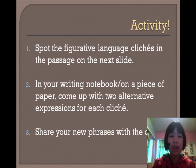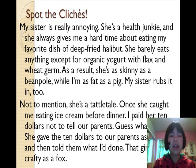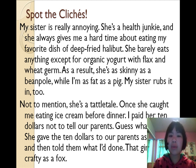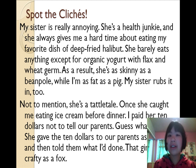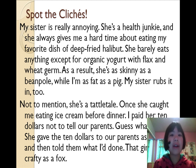Here's an activity for you: spot the figurative language clichés in the passage on the next slide, and in your writing notebook or on a piece of paper, come up with two alternative expressions for each cliché. Spot the clichés: "My sister is really annoying. She's a health junkie, and she always gives me a hard time about eating my favorite dish of deep-fried halibut. She barely eats anything except for organic yogurt with flax and wheat germ. As a result, she's as skinny as a beanpole, while I'm as fat as a pig. My sister rubs it in, too. Not to mention, she's a tattletale. Once she caught me eating ice cream before dinner, I paid her $10 not to tell her parents. Guess what she did? She gave the $10 to her parents as a gift, which she couldn't very well take back, and then told them what I'd done. That girl is as crafty as a fox."